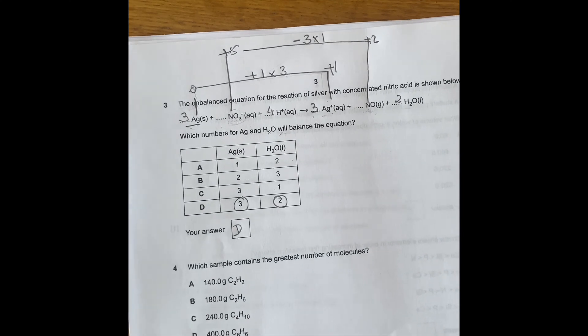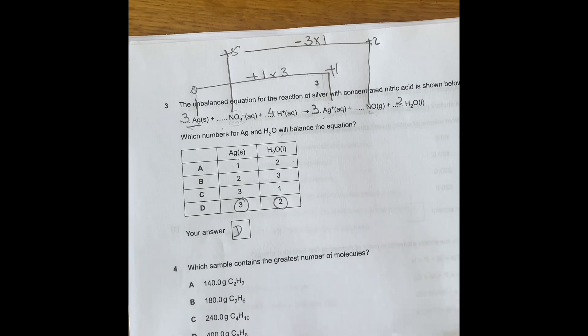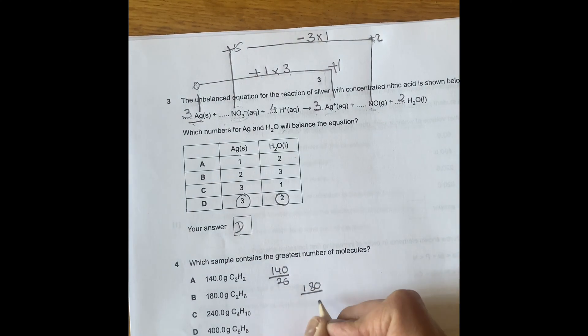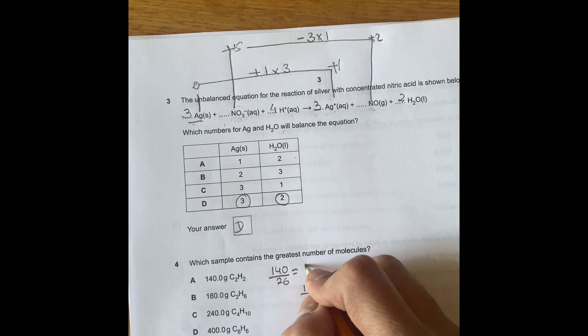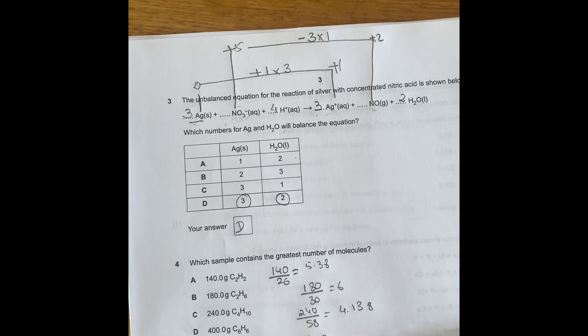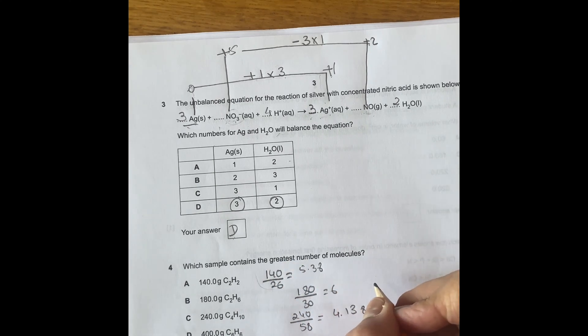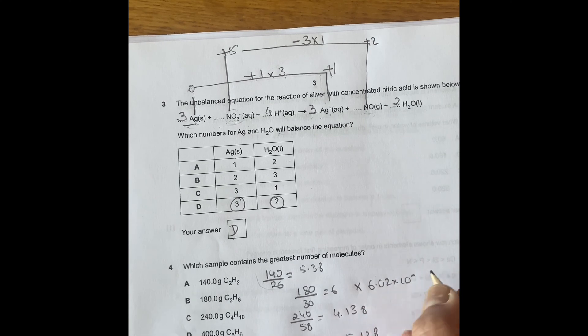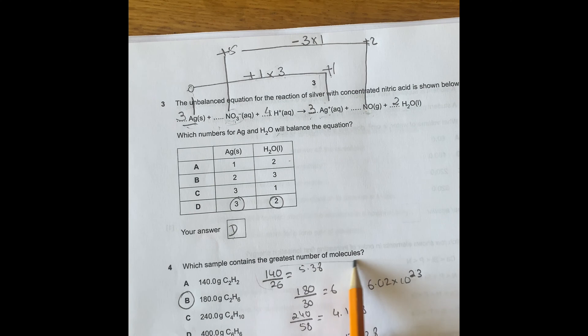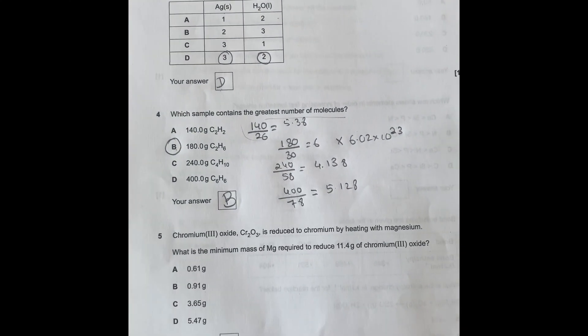The next bit here is number 4. Which sample contains the greatest number of molecules? All you have to do is work out the moles of each one of them. So I'll just go 140 divided by 26 for the first one. Then you go 180 divided by 30, which equals to 6, that one equals to 5.38. And then the third one is 240 divided by 58, which is the MR of that, which gives you 4.138. And then the fourth one is 400 divided by 78, which gives me 5.128. So if you multiply everything by the Avogadro's constant, you'll know that this one here will give you the same ratio, is the biggest one. So it gives you, you're going to get this number of molecules. So it's going to be B.